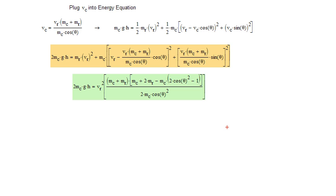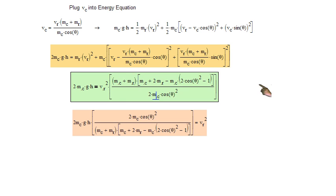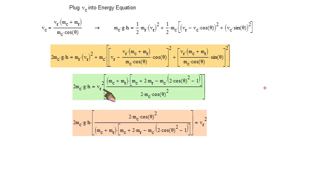So if we solve for VR squared, we get this. We take this quotient, multiply it on both sides by the reciprocal, and we get VR squared equals all this stuff. Square root both sides to solve for VR.